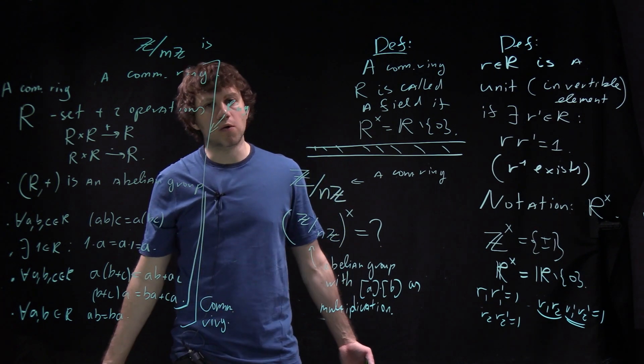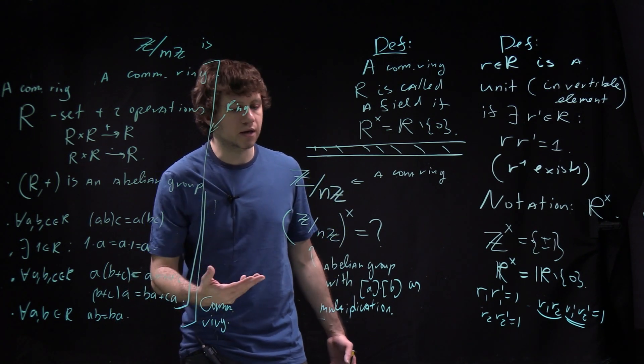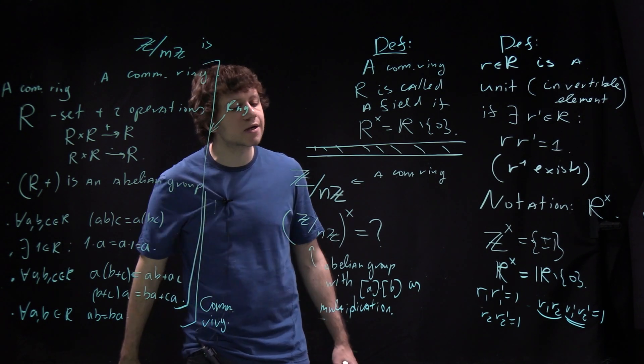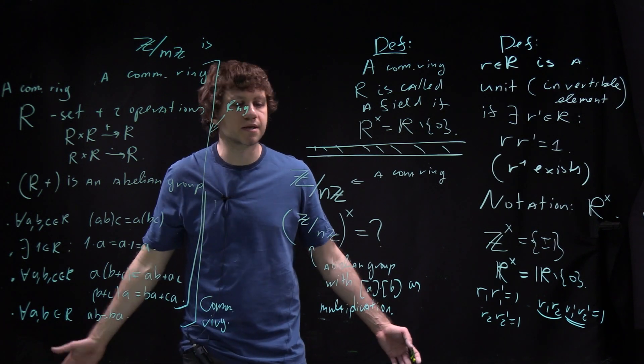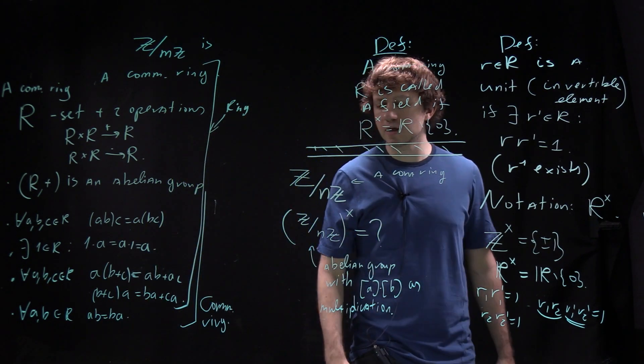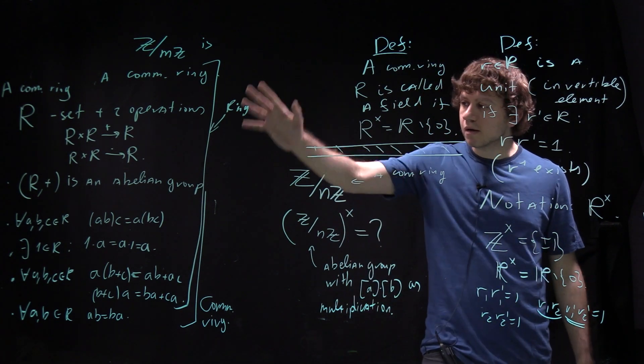We don't know all abelian groups, but we know some. We can answer: is it like Z over something Z? Is it cyclic or not? These are all very interesting questions. Before I discuss them, let me look at some examples.